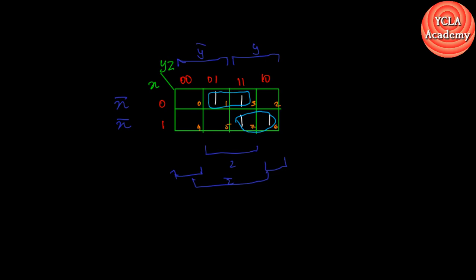I will just change the color. First, how can we get the prime implicant? How can we get these values? Looking at x-bar — here we can see the key, this is x-bar.